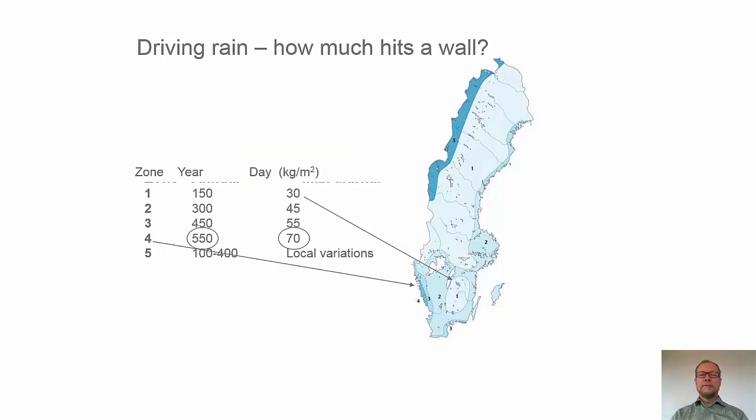There's a Swedish map of driving rain, and this looks different in different countries, but we see we have different zones, and zone 4, we have very high driving rain rates. On the west coast, where Gothenburg is situated,